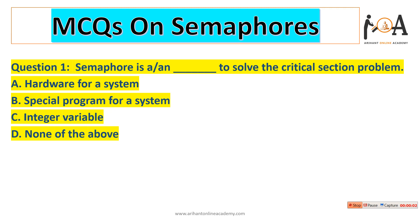Question number one on SEMA 4 is: SEMA 4 is an integer value to solve the critical section problem. Option A is hardware for a system — SEMA 4 is not hardware. Option B is special program — no. Option C is integer value — yes. Option C is the right answer. SEMA 4 is an integer value to solve the critical section problem.